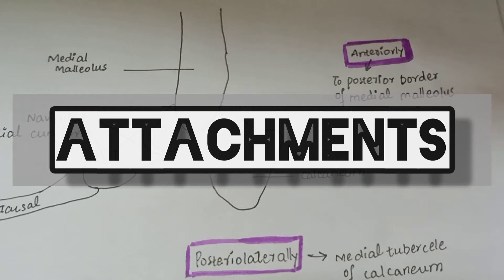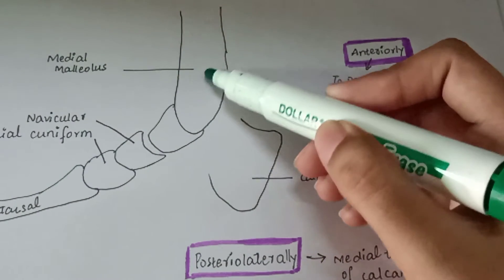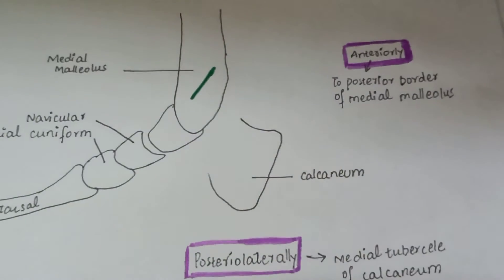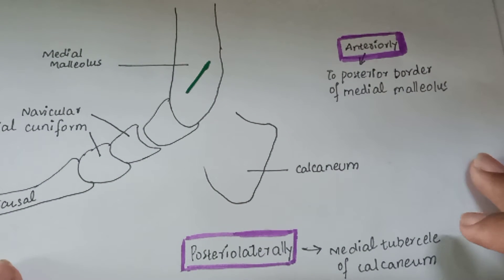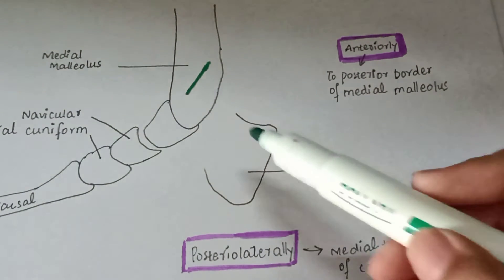Now we will see the attachments of the flexor retinaculum. Anteriorly, it is attached to the posterior border of the medial malleolus. And posteriorly, it is attached to the medial tubercle of the calcaneum.